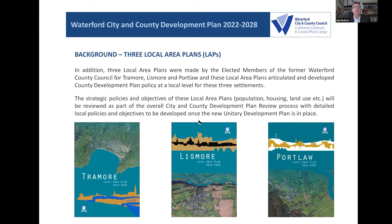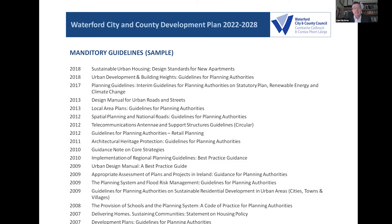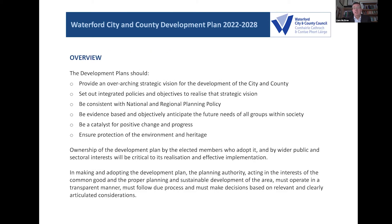There are also mandatory guidelines — what are referred to as Section 28 guidelines under Section 28 of the Planning and Development Act. The minister will occasionally issue guidelines to all local authorities setting general guidance on things like densities, building heights, flood risk management, and urban design. Every local authority is bound to have regard to those both in day-to-day operations and in the preparation of development plans.